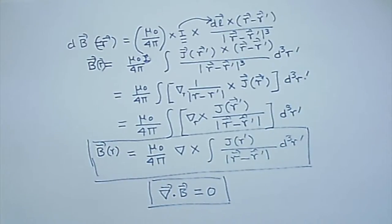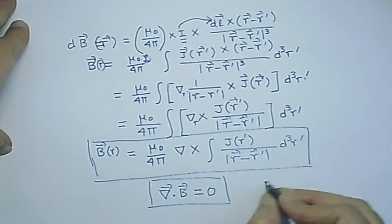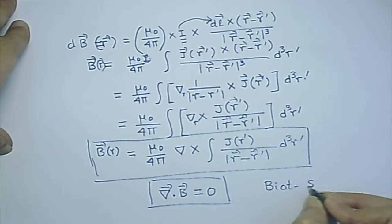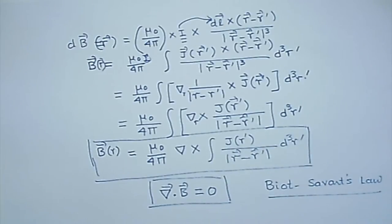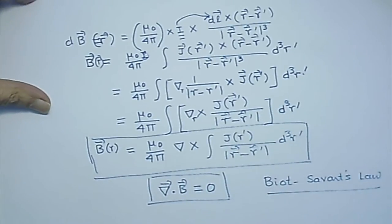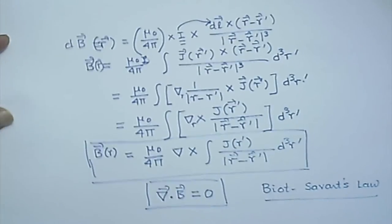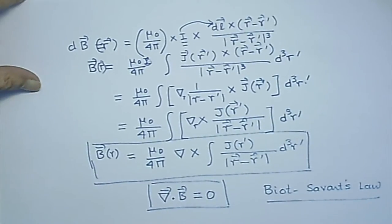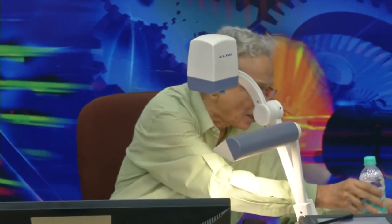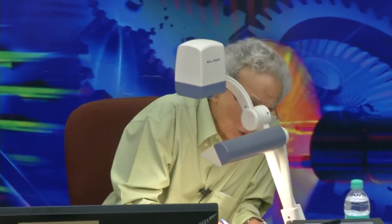In order to know a field completely, I need to find not only its divergence but also its curl. So what is curl B? B(R) is given by (mu_0/4pi) del × integral of J(R')/|R − R'| d³r'. Because B can be expressed as a curl of a quantity, del·B = 0 — that is the magnetic Gauss's law.